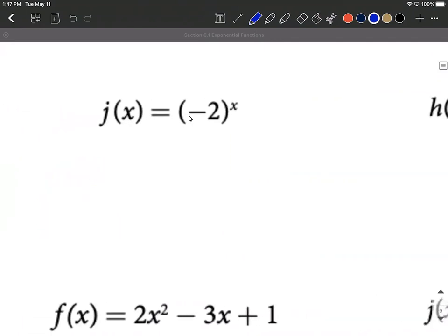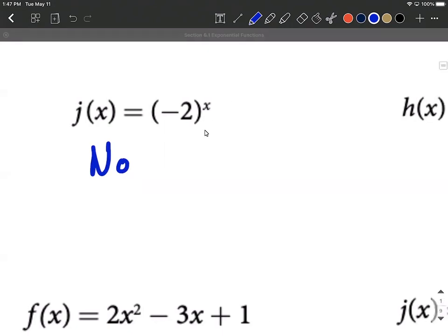On this next one, j of x, negative two raised to the x power, we'd have to answer no on this one because our base, this would be where b is, has to be positive, can't equal one. This is a negative for our base. That's not okay.